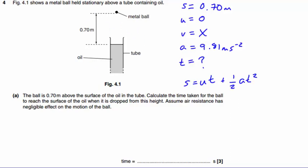And straight away we can lose this term because we know that U is 0. So we're left with S equals half AT squared, which we can rearrange to get T equals square root of 2S divided by A.